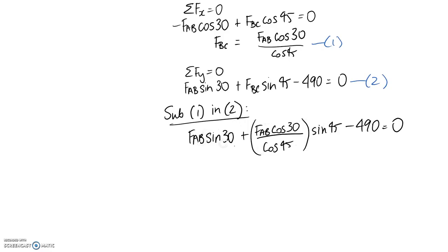So if we put everything together that has FAB in it we end up with 1.366 times the variable and if I move this to the other side it becomes positive 490. So FAB on its own is about 358.7 Newtons.